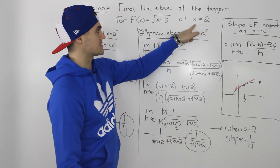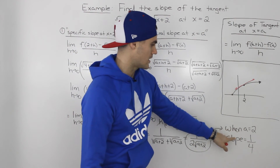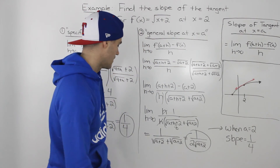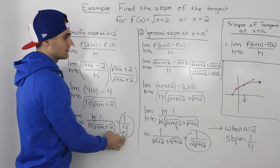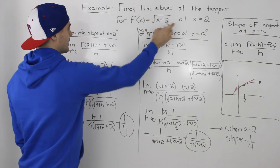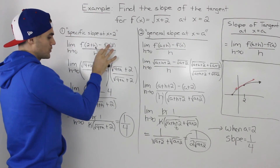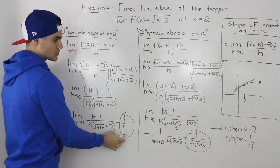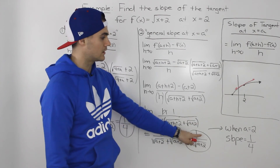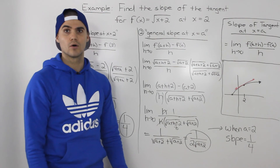In the question we want it at the specific x value of 2, so we plug in 2 for a in this formula and get a slope of 1 over 4 — the same answer we got before. So the two methods agree: in the first method we plugged in the specific a value of 2 right away in the difference quotient and solved directly; in the second method we found the general slope formula first and then plugged in a equals 2, still getting 1 over 4.